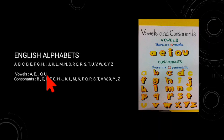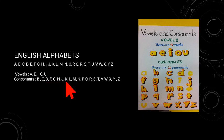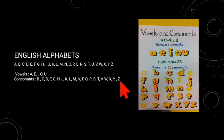Next one: consonants. B, C, D, F, G, H, J, K, L, M, N, P, Q, R, S, T, V, W, X, Y, Z. These are called consonants.